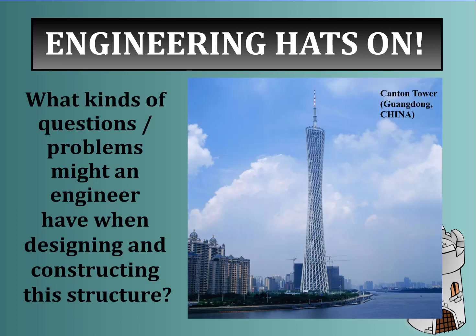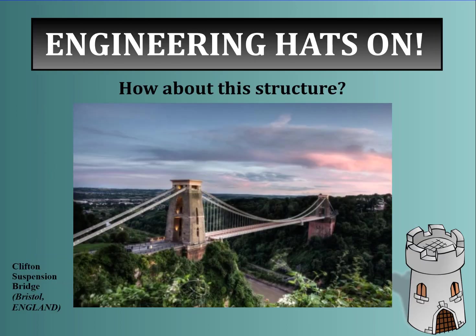When you're looking at towers, what kinds of questions or problems might an engineer have when constructing that tower? The Millau Bridge had a span problem - they couldn't just hoist the bridge up, it was too high. They had to push it from the edges to the middle. What sorts of problems might you envision in other structures, like this suspension bridge in England?